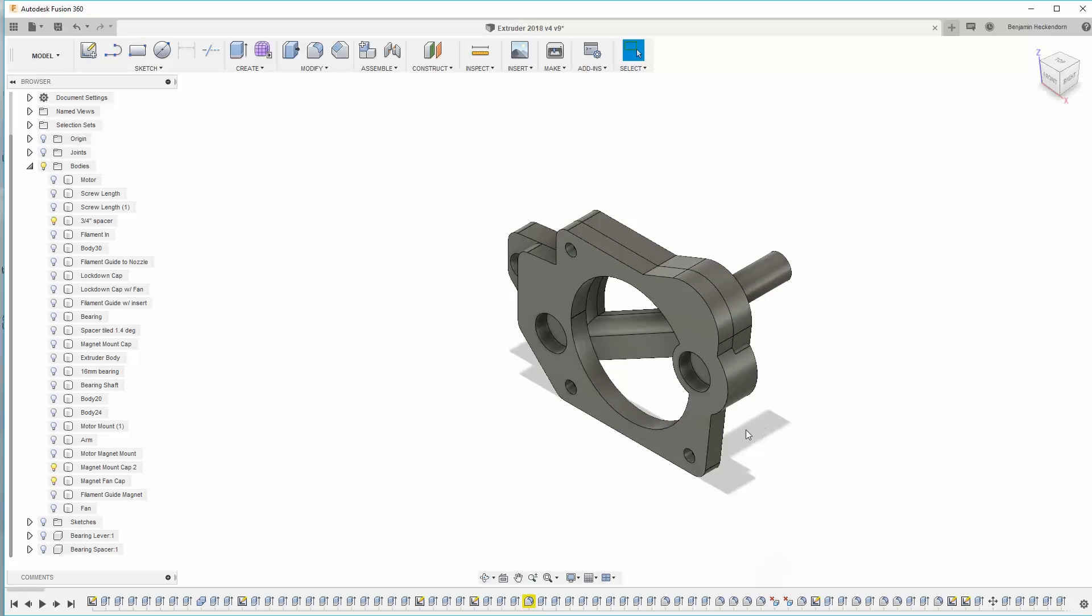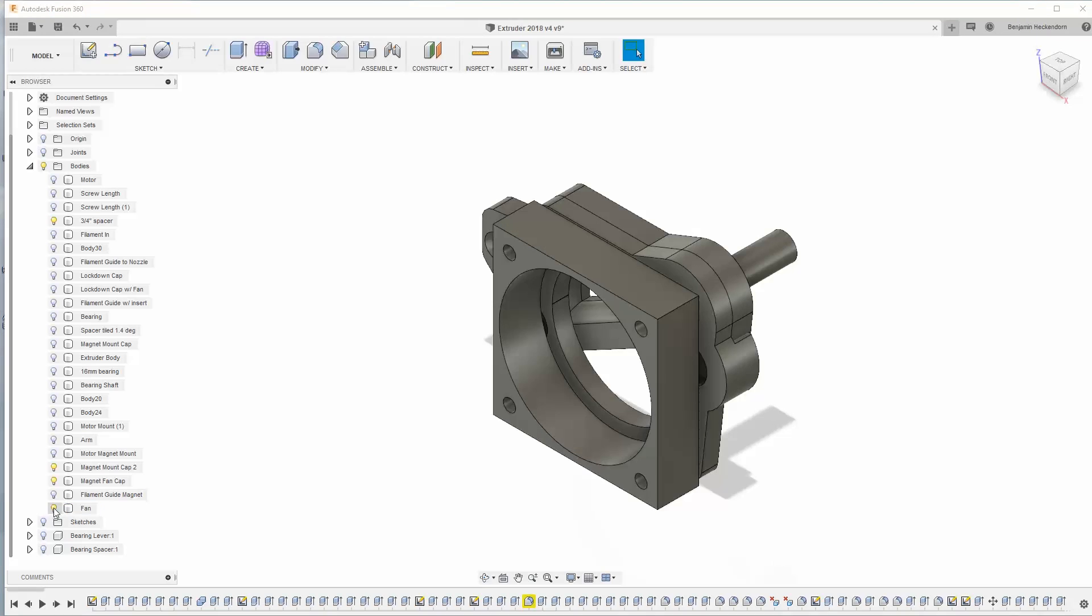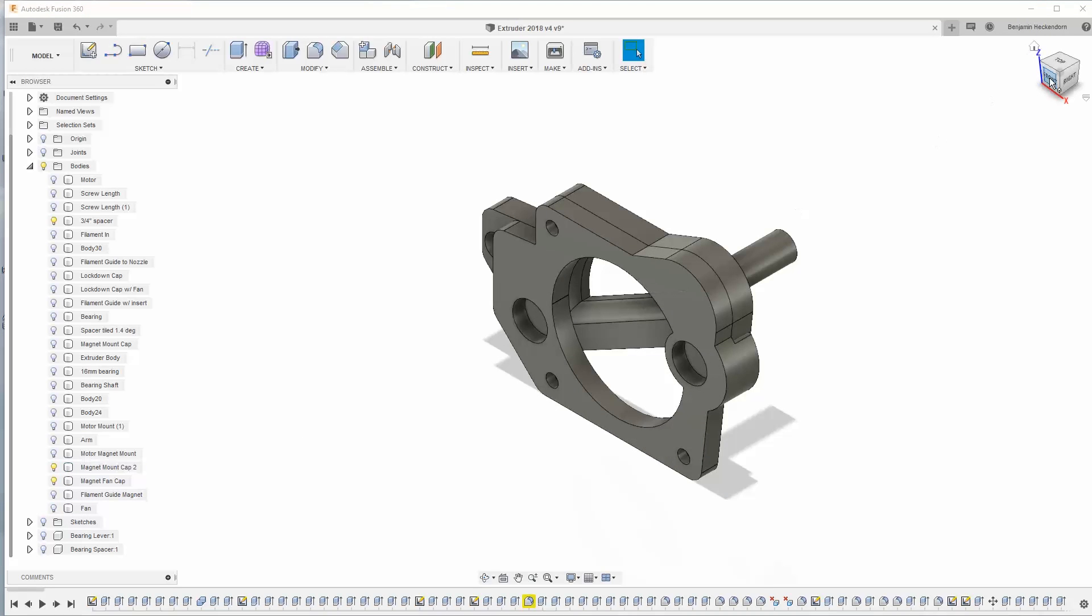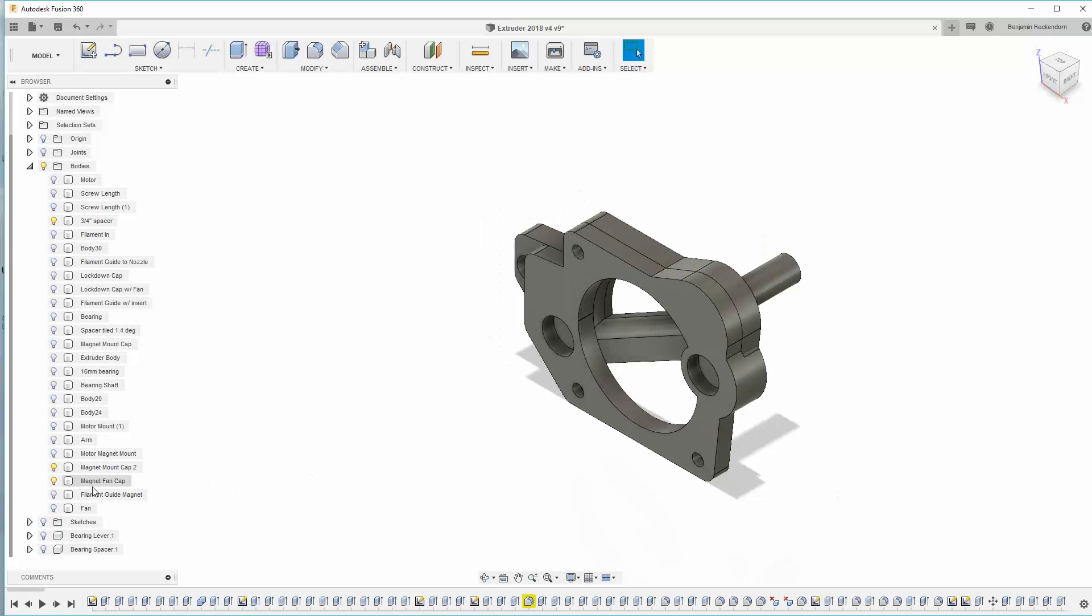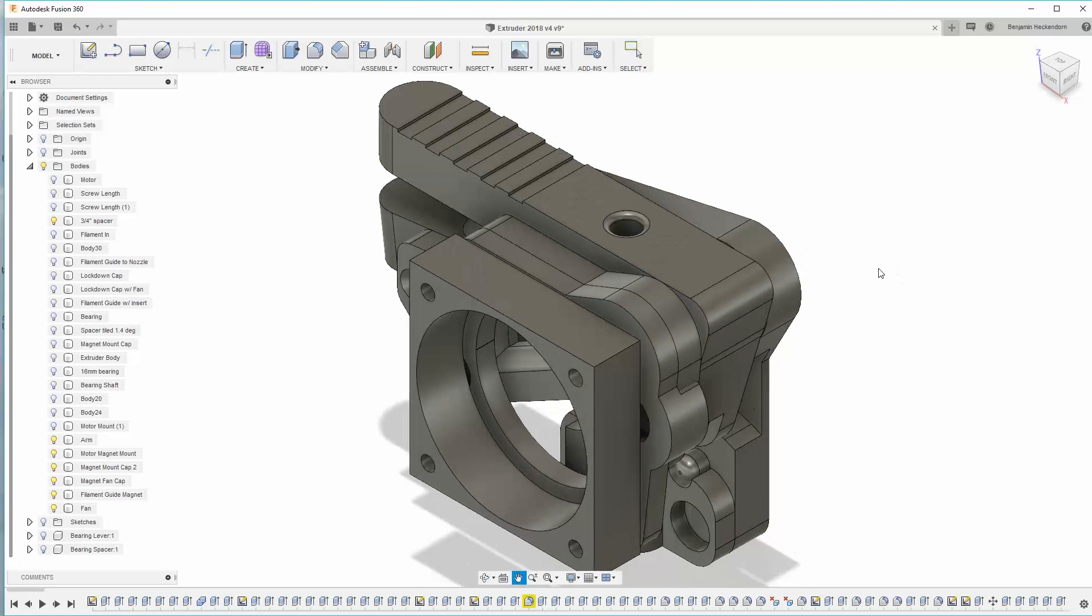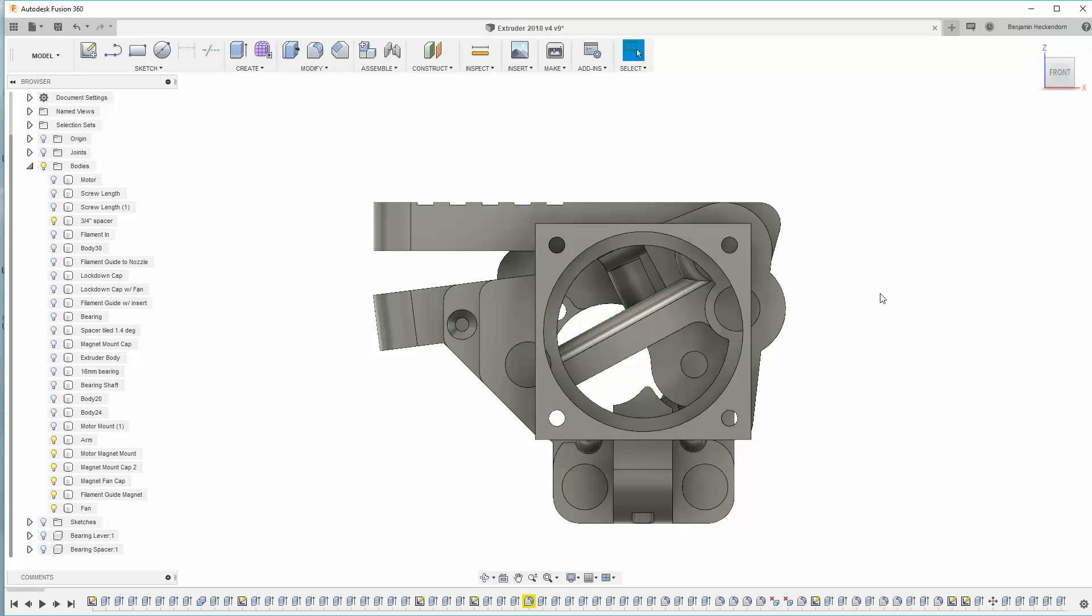So we'll have countersunk screws going through that coming out the front which will attach to the fan. I mean yeah okay it is more complicated than the original but it will have a lot of magnetic quick release. So the filament should be pushed through with greater force and hopefully jam less or be more reliable at least.